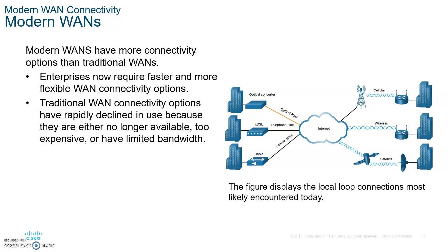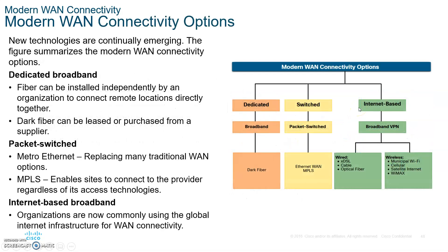Now we move to modern WANs. Today, you mostly connect over the Internet. Options include optical fiber, DSL (now largely legacy), cable, cellular, wireless, and satellite. They all travel over the Internet and interconnect with each other very easily.